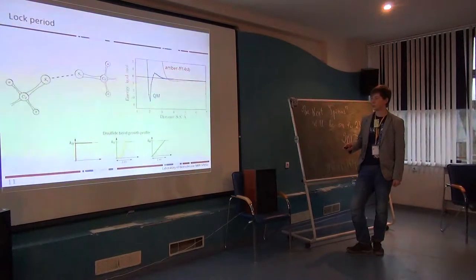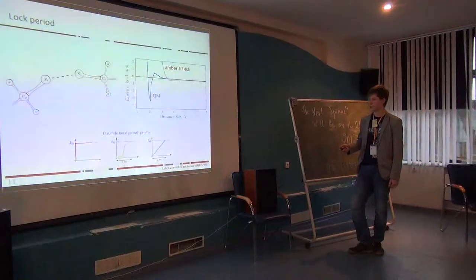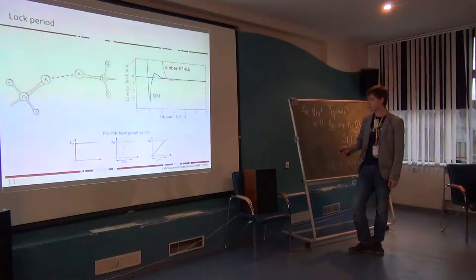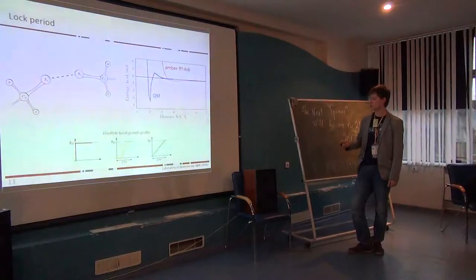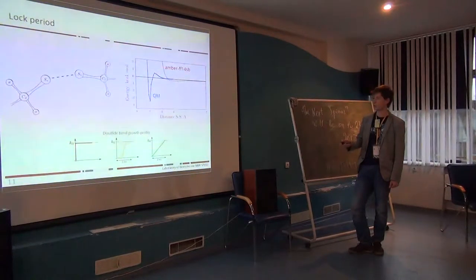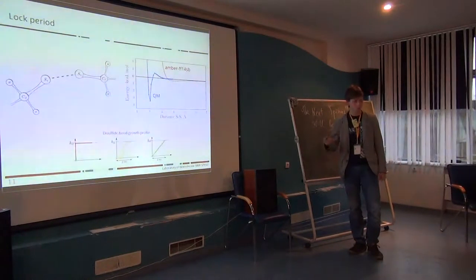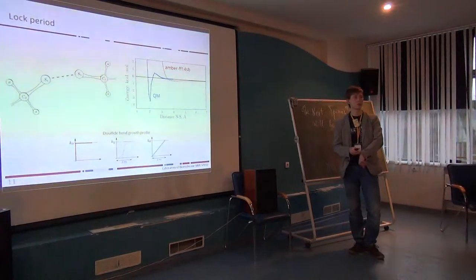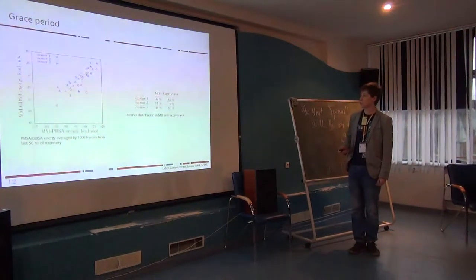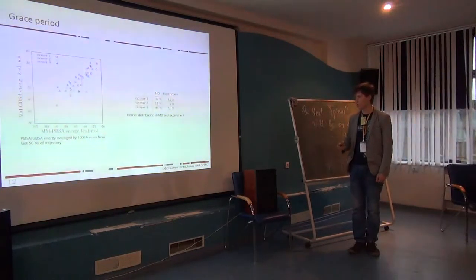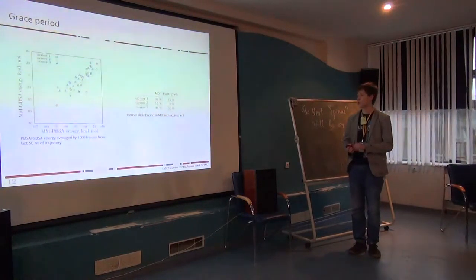Once two sulfur atoms came at 2.5 angstroms, we start a log period process, and we tried several profiles to introduce disulfide bond. We ended up choosing the green one, because it is the most simple and works. The steep introduction of force perturbed systems too much, so it was not so good.